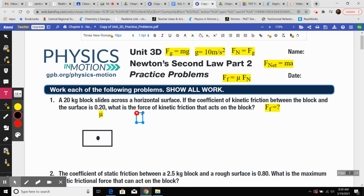So Fg is going to equal mg, which equals mass of 20 times 10, which gives me 200 Newtons. Cool? Everybody cool with that?